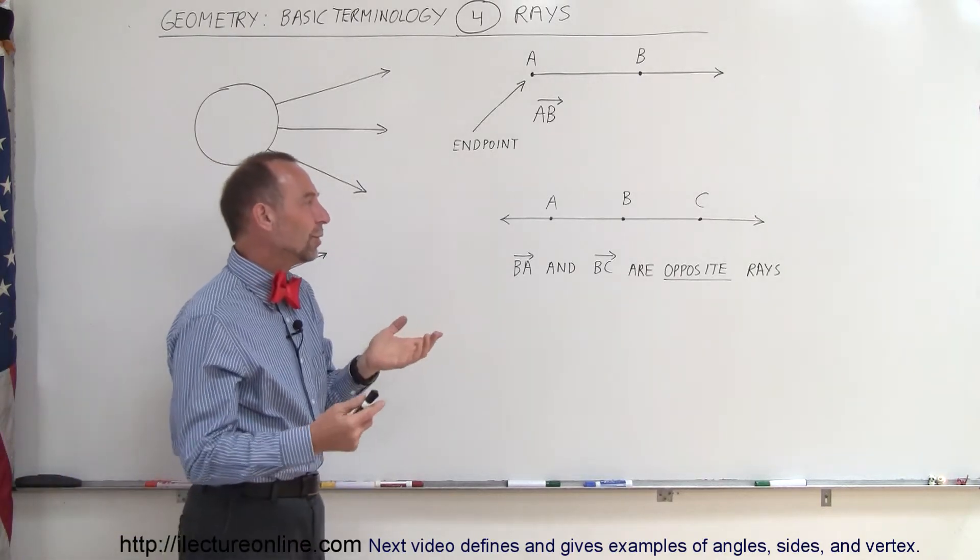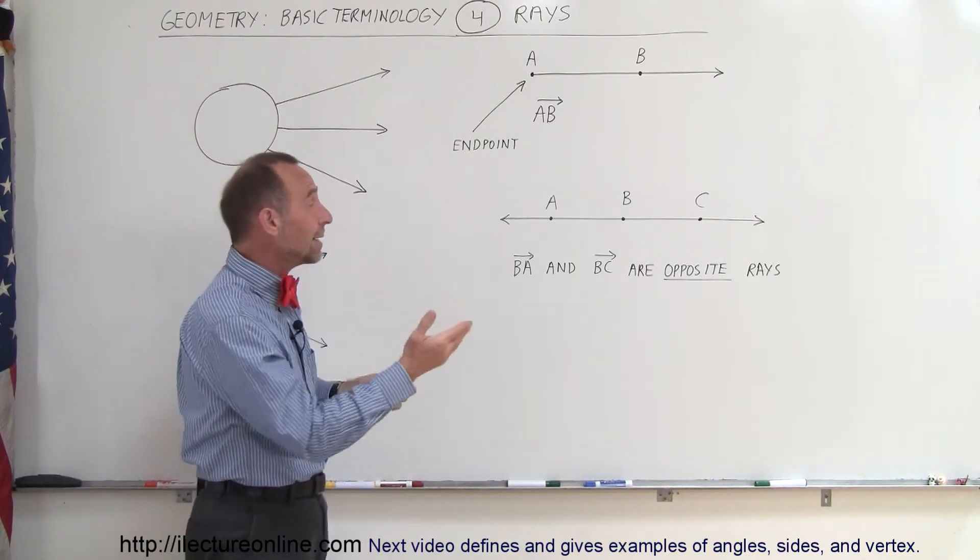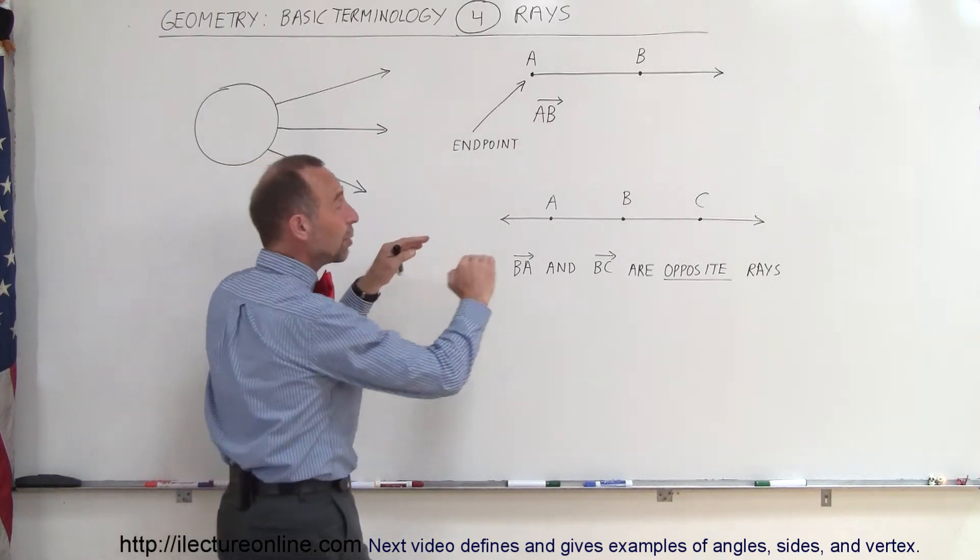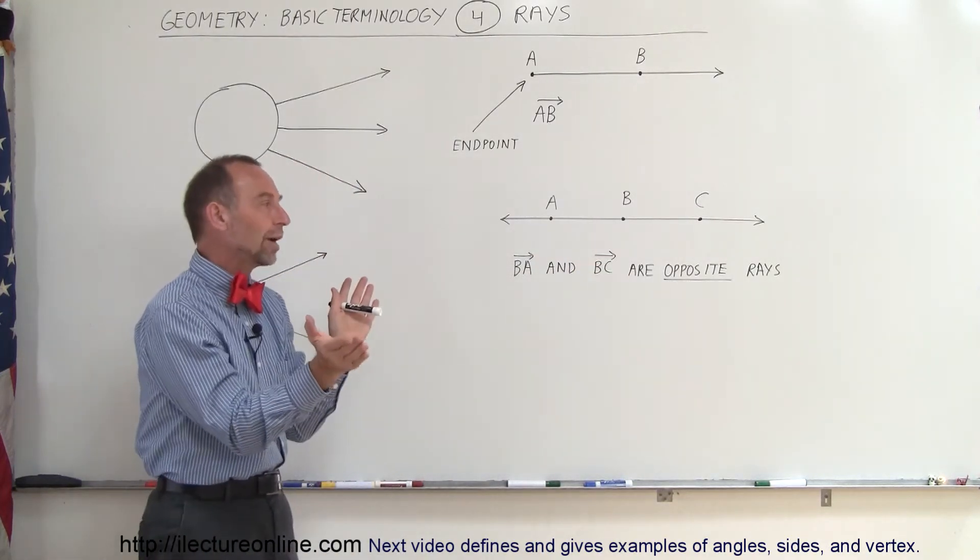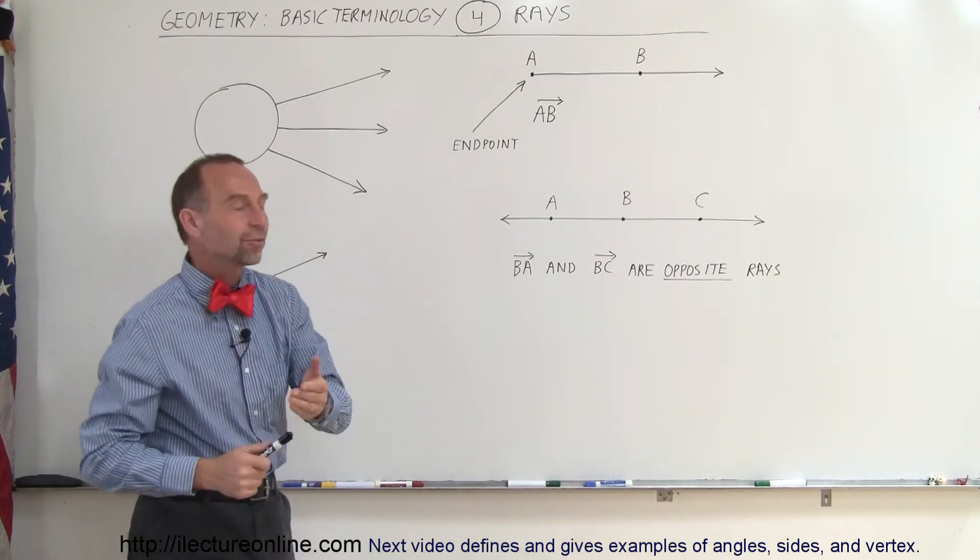Here we have something interesting. When you think about it, this looks like the line AC goes infinitely in both directions, or you can also think of it as being two rays that are in opposite directions, and therefore they're called opposite rays.